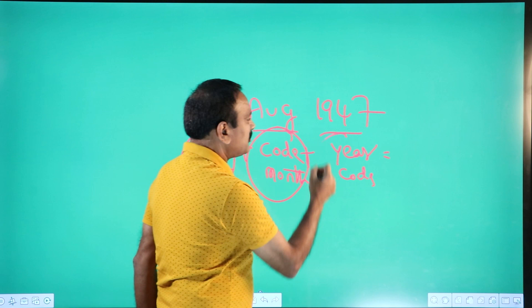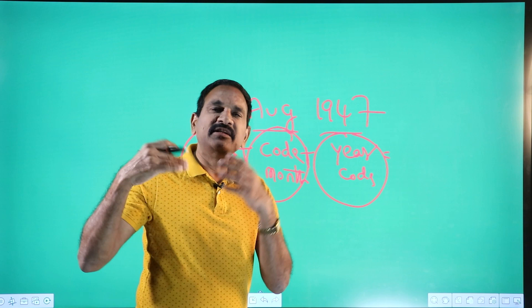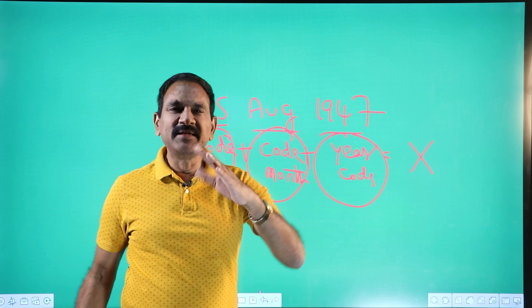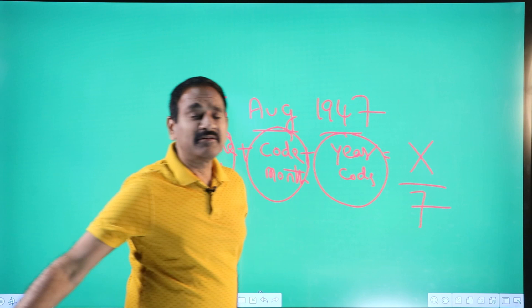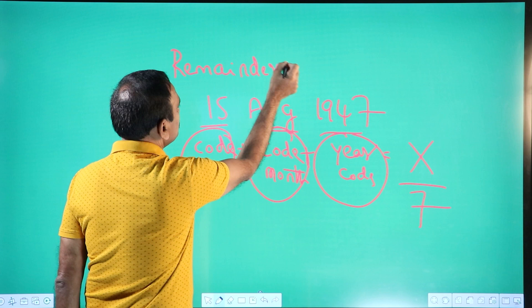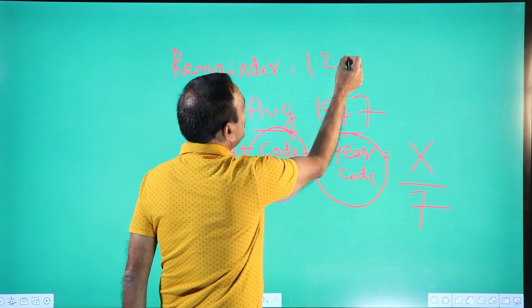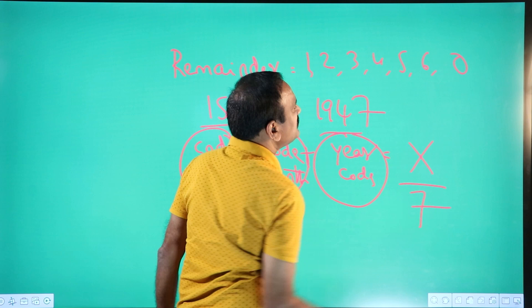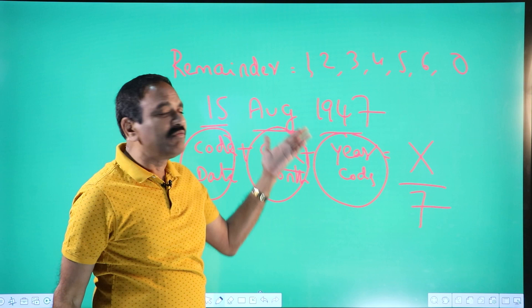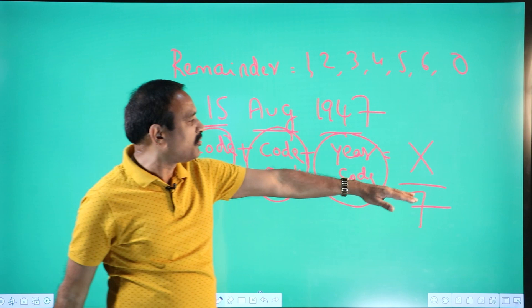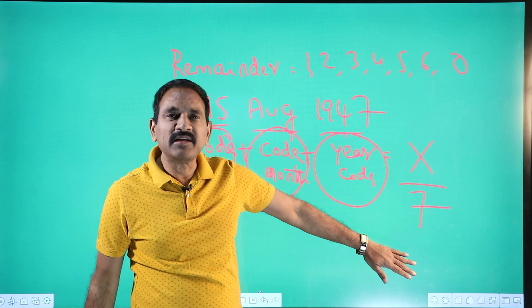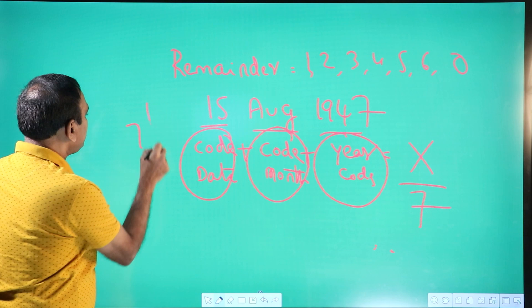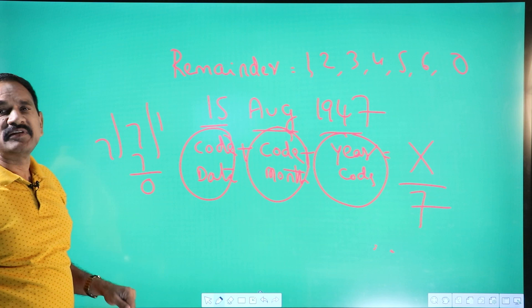You get a total — maybe 10, 15, 20, 25, 30, whatever number. Let's call that number X. Whenever you get the total, divide it by 7 and you will get a remainder. The remainder can only be 1, 2, 3, 4, 5, 6, or 0 — you can never get 7 as a remainder. For example, if the total is 7, then 7 divided by 7 gives a remainder of 0. So based on this remainder, you will tell the day.